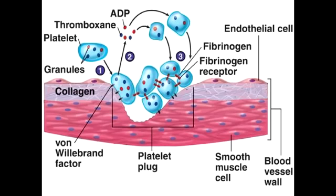The third step of platelet plug formation is the aggregation step. In the aggregation step, fibrinogen comes along and binds to the glycoprotein 2B and 3A receptor. When fibrinogen binds to this area, it allows the linkage of platelets to occur, and eventually in this way, the platelet plug is formed.